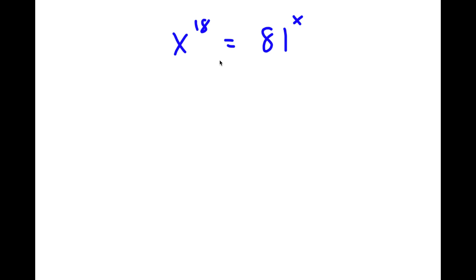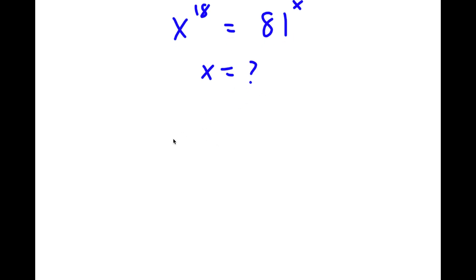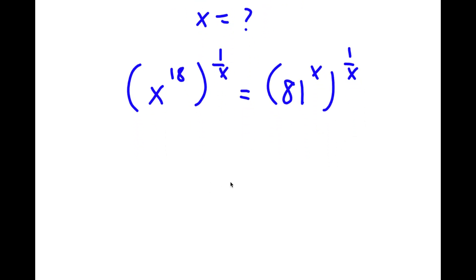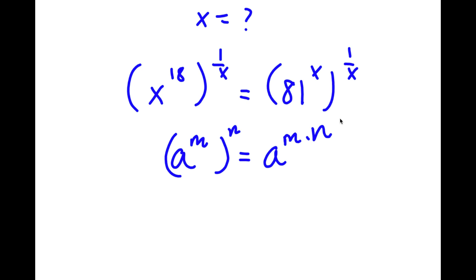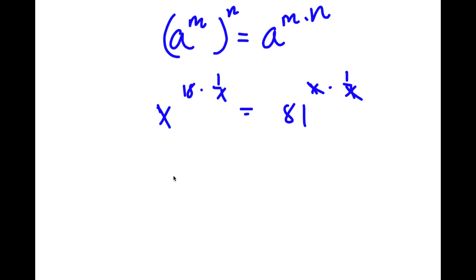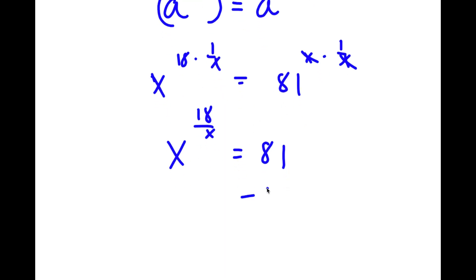In this problem, I have x to the power of 18 is equal to 81 to the power of x, and I want to find x. I'll take the power of 1 over x on both sides, giving x to the power of 18 over x equals 81 to the power of x times 1 over x, which simplifies since x times 1 over x cancels to x to the power of 18 over x is equal to 81.